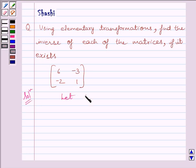Let A equal the matrix 6, minus 3, minus 2, 1. Now, to find the inverse by row transformation method, we will write A equals IA.